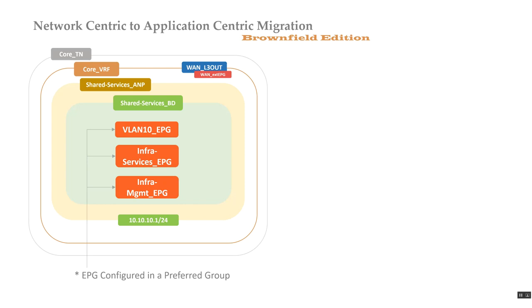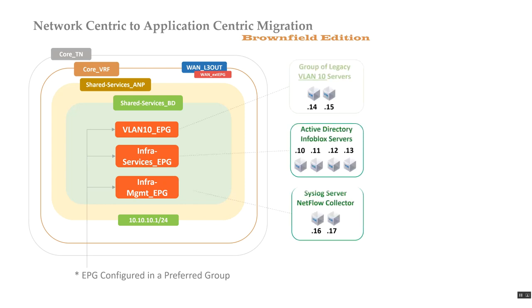The other benefit is that the application doesn't know any change has happened because its IP address is the same, DNS is the same, and it's communicating the same way. So I have those EPGs mapped to my legacy VLAN 10 servers: infra services with Active Directory and Infoblox, and infra management with syslog and NetFlow.